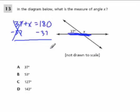Here, 180 minus 37, I think is 143. And that's my value for X.